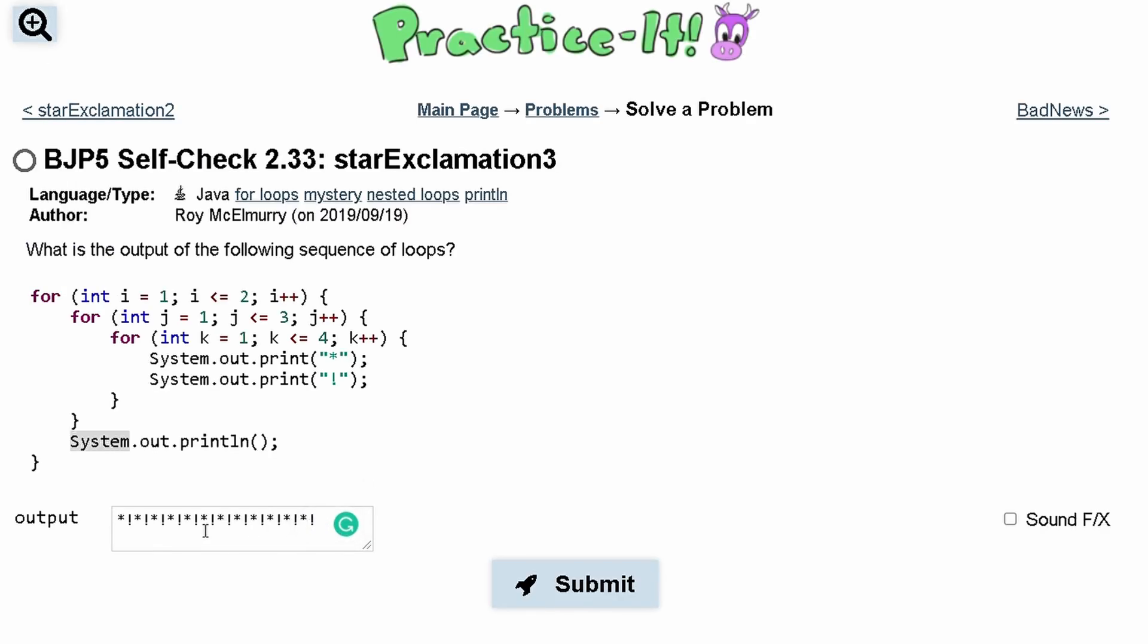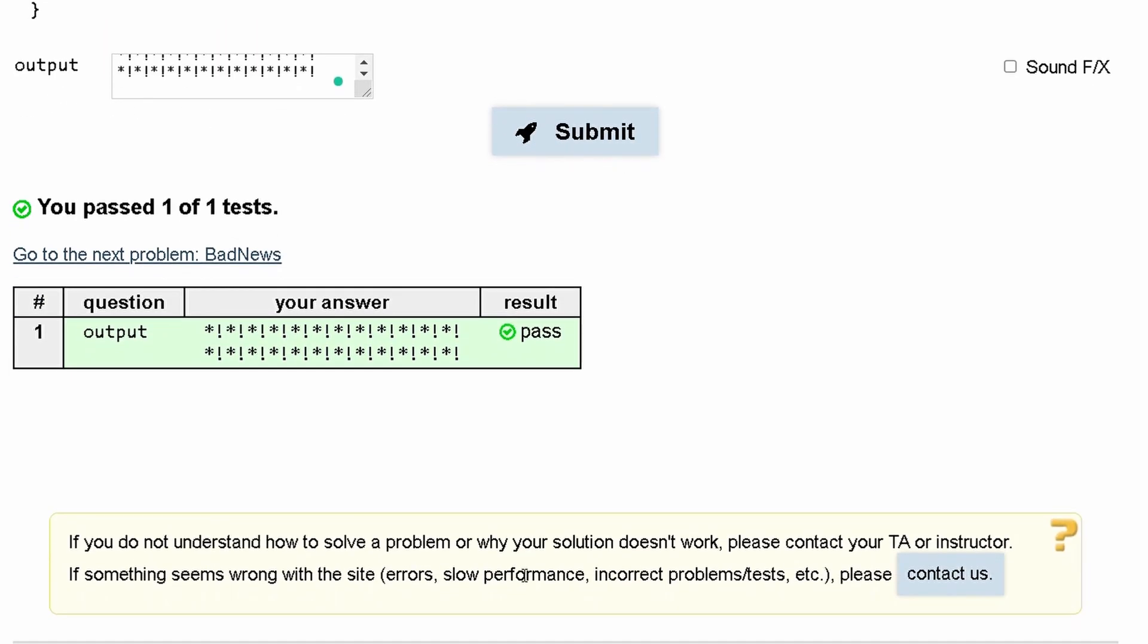And then we are going to be back on this space right here where i is equal to 2 now, and so we are going to run through this entire block of code again. So instead of doing that, we can just copy all this, paste it here because it's going to be the exact same thing. And submit it, and we have passed the test.